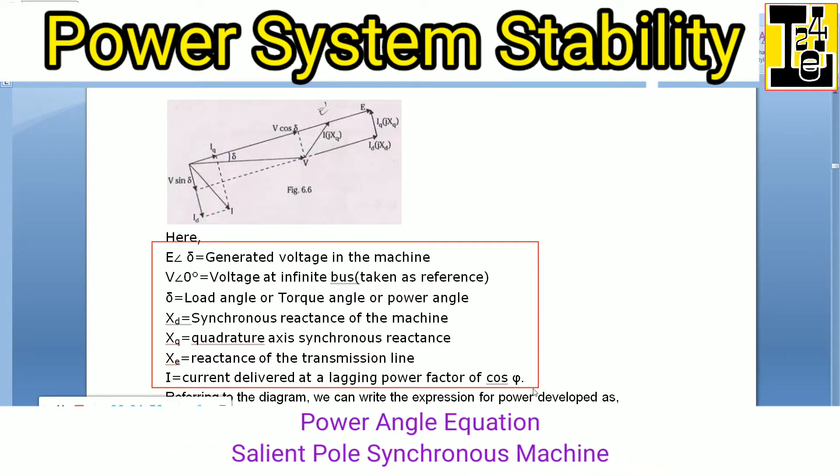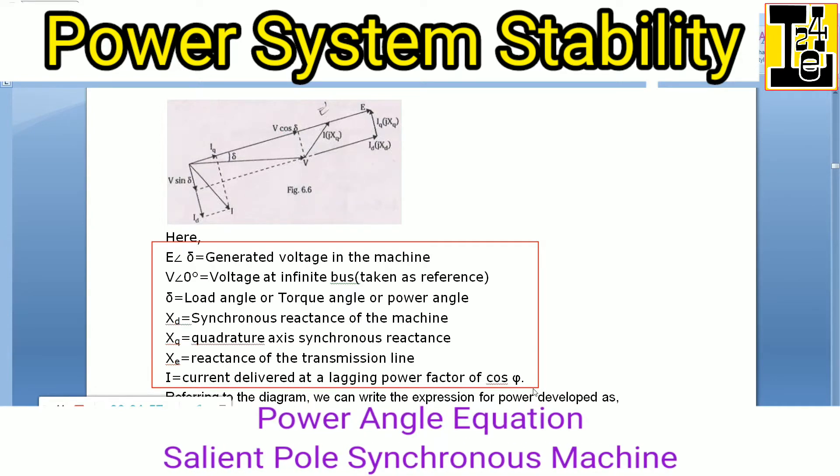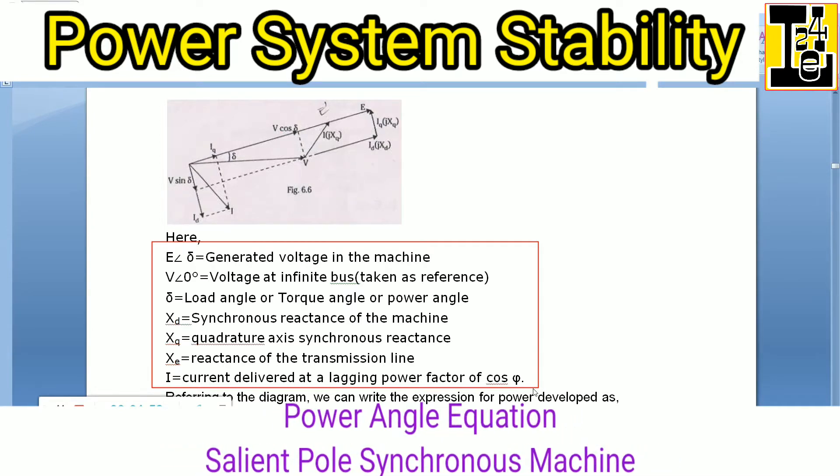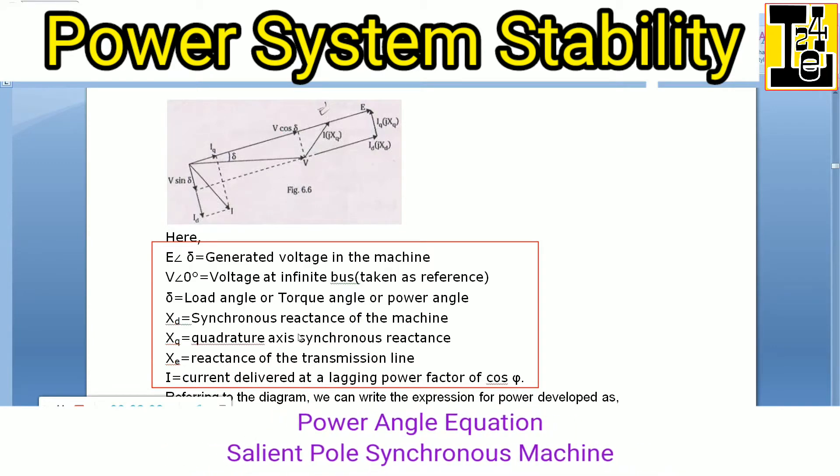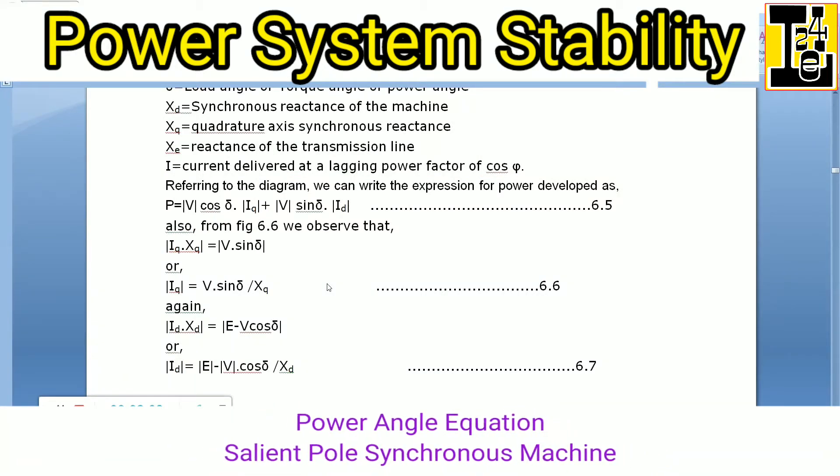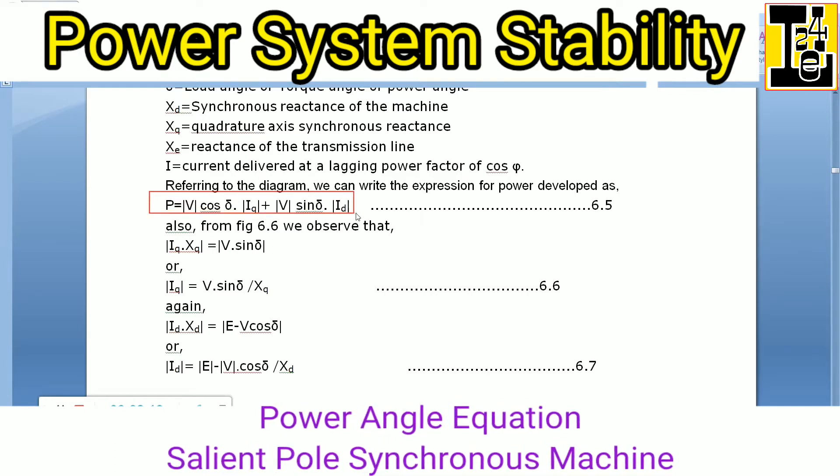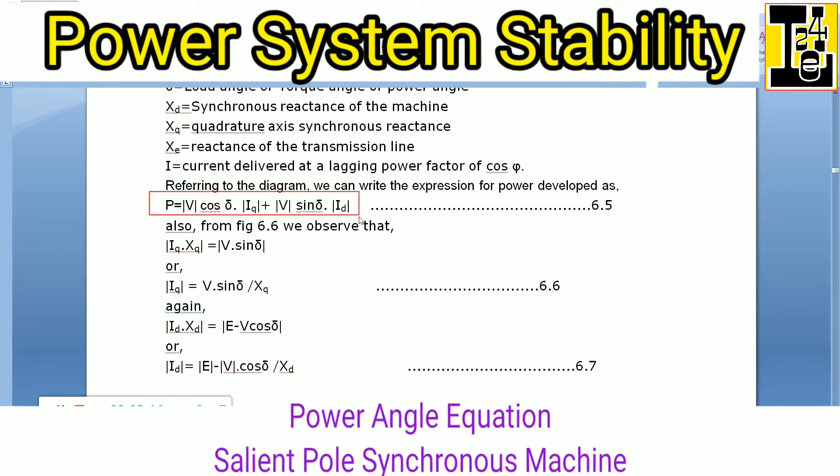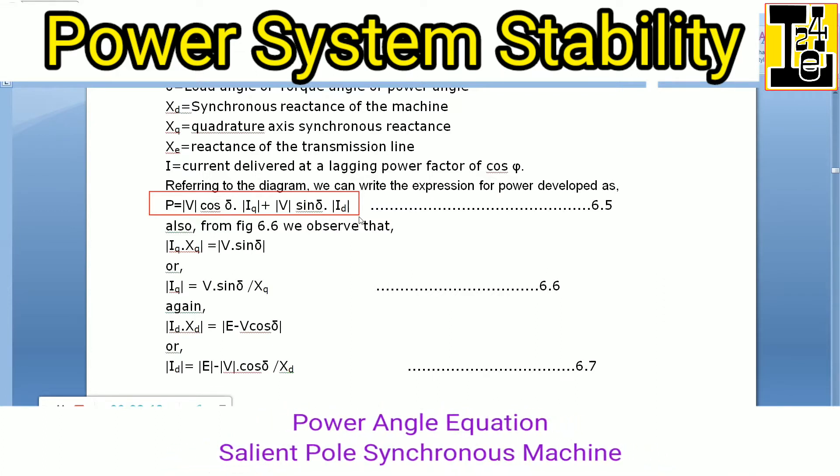Xd is the synchronous reactance of the machine. Xq is the quadrature axis synchronous reactance. Xe is the reactance of the transmission line. I is the current delivered at lagging power factor of cos φ. Referring to the phasor diagram, we can write the expression for power developed as P = V cos δ × Iq + V sin δ × Id.